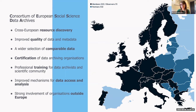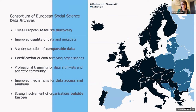Within CESSDA we provide training activities like this one, where we try to share knowledge with the community. CESSDA is also involved in data access and analysis projects and trying to broaden its scope across Europe. On this map you can see the 22 members and some partners involved in CESSDA.